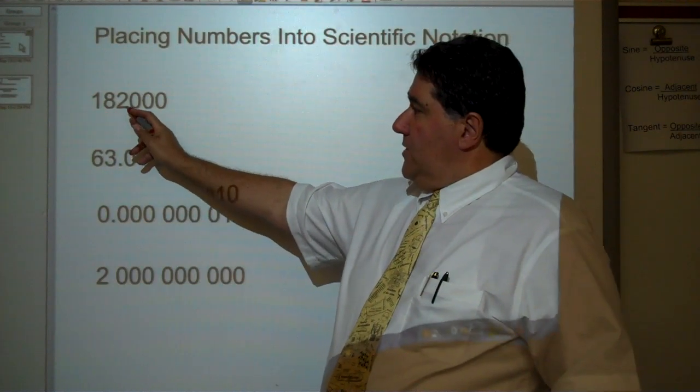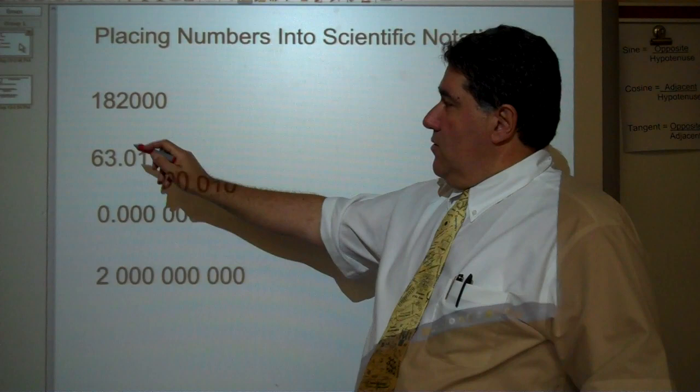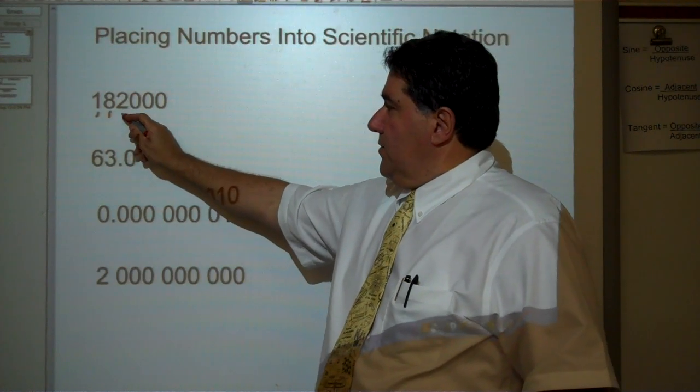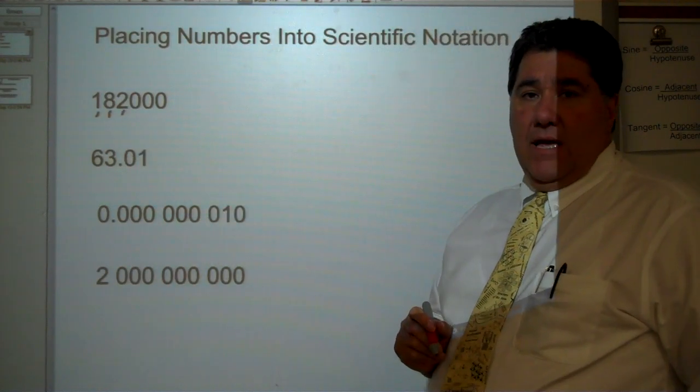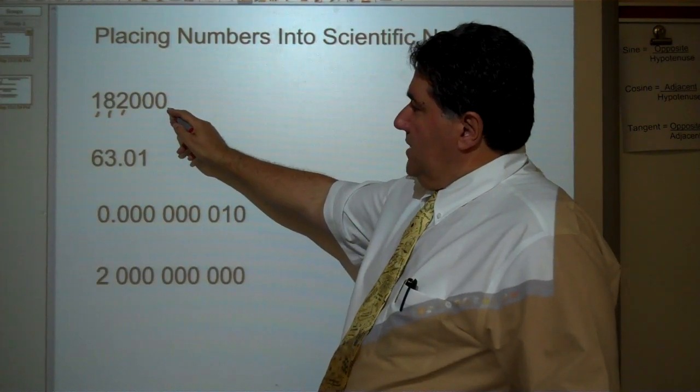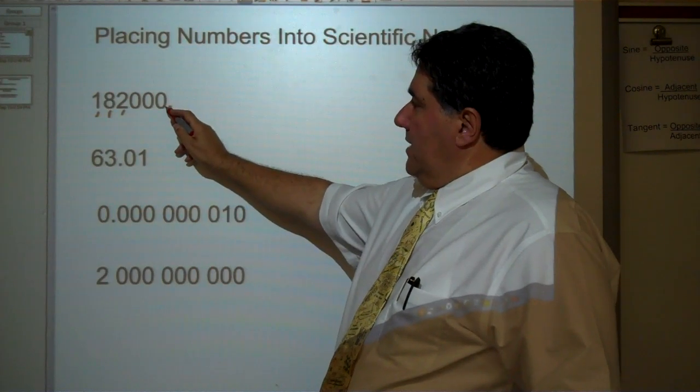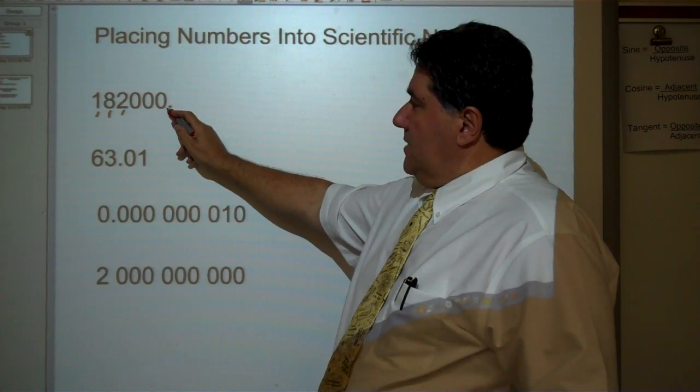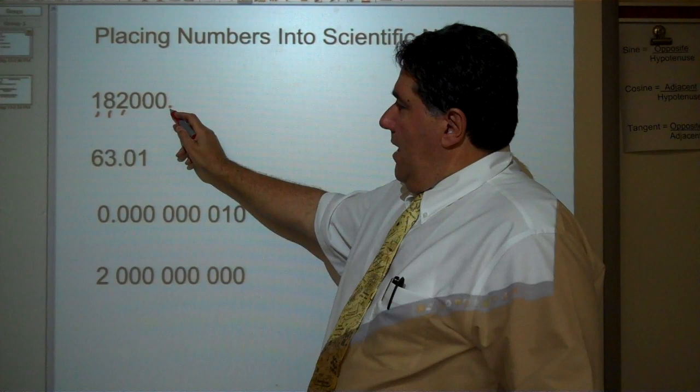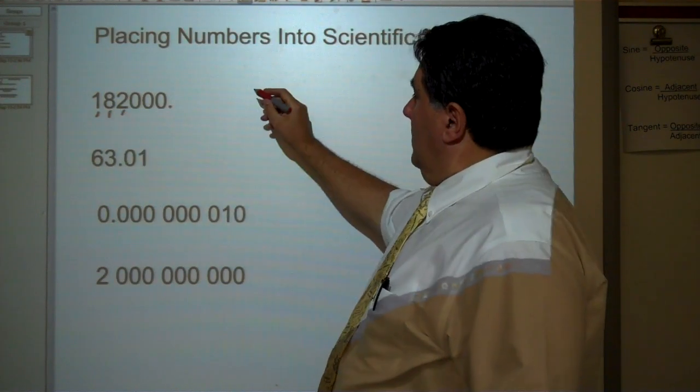We have 182,000. According to our significant figure rules, there are one, two, three significant figures in this number. And then we're assuming there's a decimal place right here at the end of this number. So we're going to actually capture how many decimal places we have to move in order to reach right after the first digit.